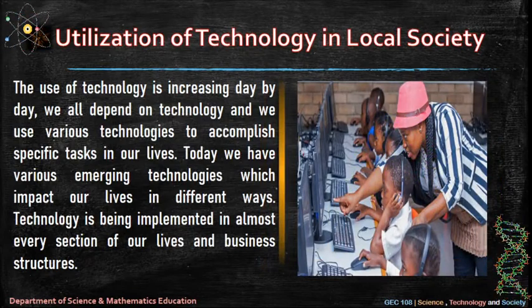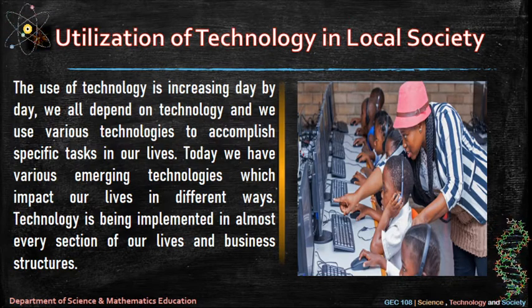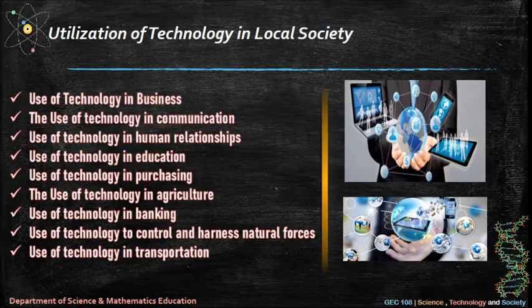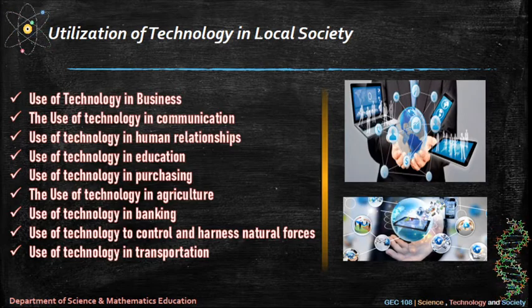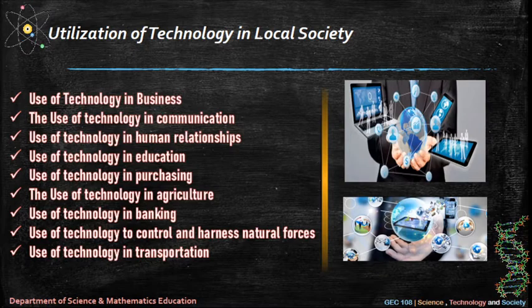Utilization of technology in local society: the use of technology is increasing day by day. We all depend on technology and use various technologies to accomplish specific tasks in our lives. Today, various emerging technologies impact our lives in different ways, and technology is being implemented in almost every section of our lives and business structures. Areas of utilization include: use of technology in business, communication, human relationships, education, purchasing, agriculture, banking, controlling and harnessing natural forces, and transportation.